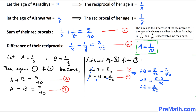To isolate B, we multiply both sides by 1/2. The 2s cancel, so B = 1/40.